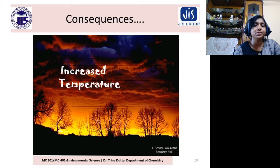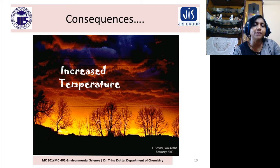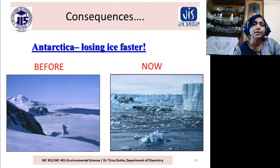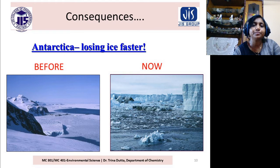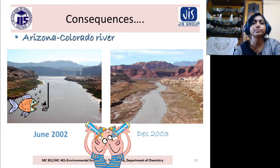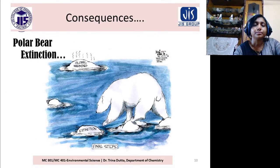What are the consequences of global warming? The first consequence is the increased temperature of the Earth's surface. Another consequence is the melting of glaciers. You can see a scenario — Antarctica before and now. Also Alaska from 1914 to 2004. The Arizona Colorado River — you can see it is dry.